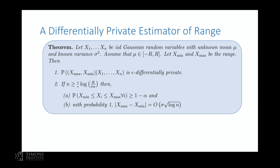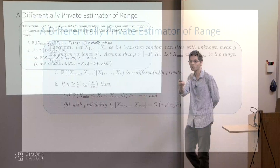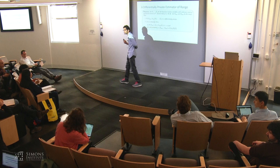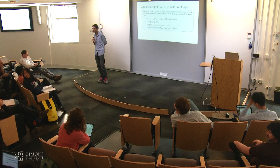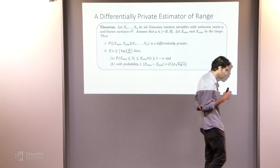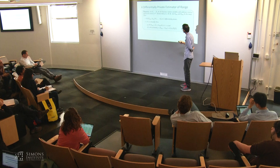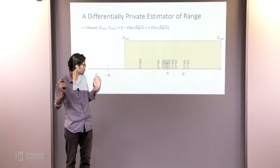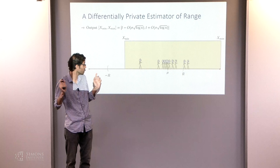Question: Since you know sigma squared, couldn't you just truncate at R plus a few sigmas from the beginning and skip this step? You could do that, but it would still lead to sub-optimal dependence on the sample complexity. The histogram-based approach achieves optimal dependence. The estimated range uses the largest noisy bin expanded by sigma * sqrt(log n) rather than the fixed bound R.